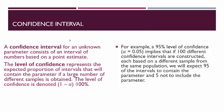The level of confidence represents the expected proportion of intervals that will contain the parameter. The level of confidence is denoted as (1 − alpha) × 100%. Think of alpha as how often you'll be wrong. For example, a 95% confidence interval means you're 95% confident in your results and wrong 5% of the time. This implies that if 100 different confidence intervals are constructed, each based on a different sample from the same population, you would expect 95 of the 100 intervals to contain the parameter and 5 to not include it.